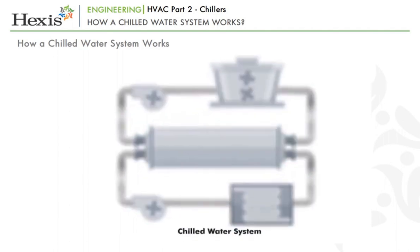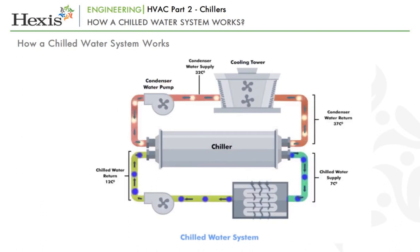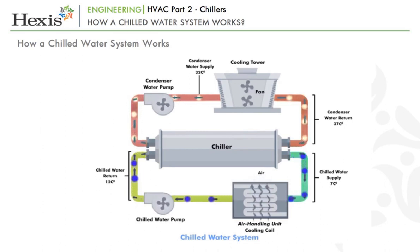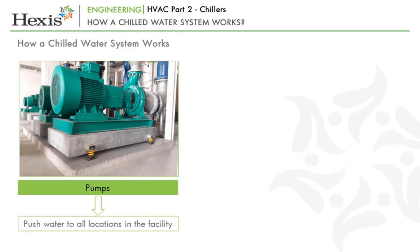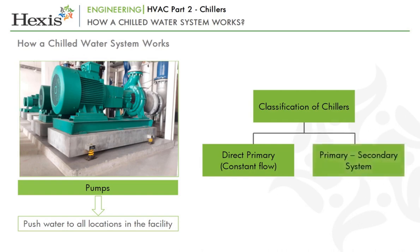Let's understand how a chilled water system works. The chiller basically removes heat from the water, which is used as a refrigerant to remove heat from the building. The chilled water circulates through a chilled water loop and through coils located in air handlers, absorbing heat from the building. It then returns to the chiller where the refrigeration process removes the heat from the water. The basic pumping arrangements used in chillers can be classified into two: direct primary, i.e. constant flow, and primary-secondary system. In a direct primary system, there is only one set of pumps used for distribution of the chilled water to the entire network and back, at constant flow irrespective of the load. This system is inefficient because of the wastage of energy, as the mixing of chilled bypass water with the return water reduces the efficiency of the chillers.